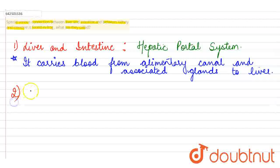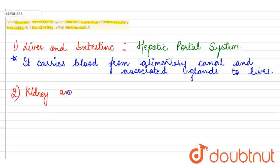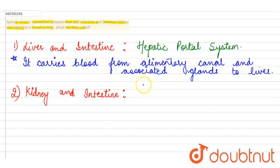The second venous connection being asked about is between kidney and intestine. The portal system present between the kidney and intestine is known as the renal portal system.